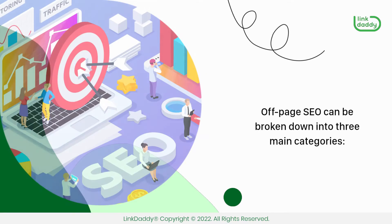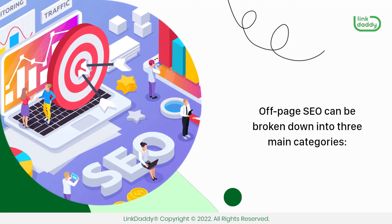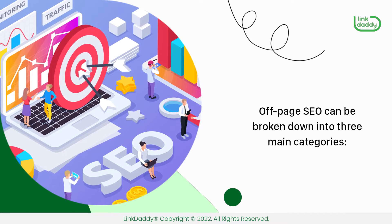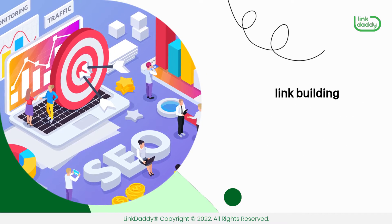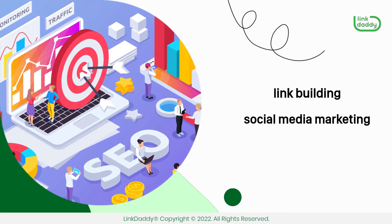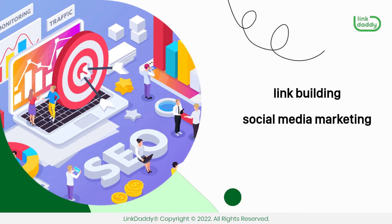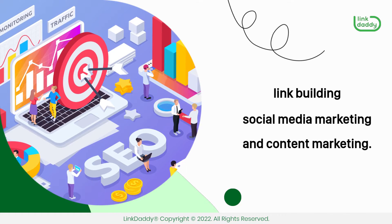Off-page SEO can be broken down into three main categories: link building, social media marketing, and content marketing.